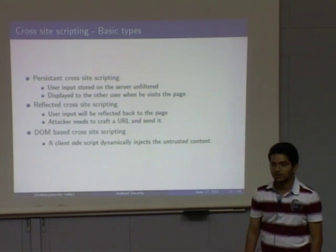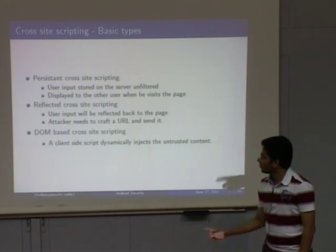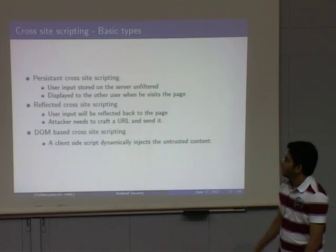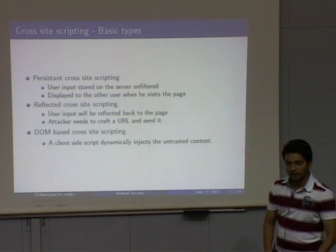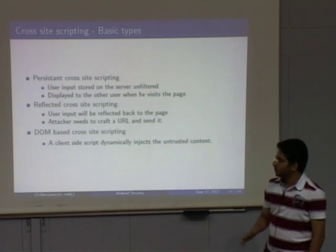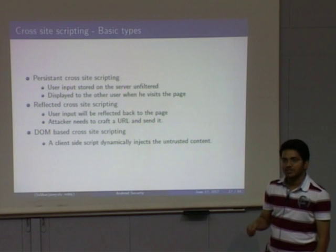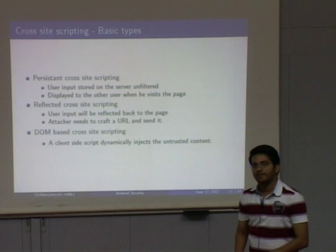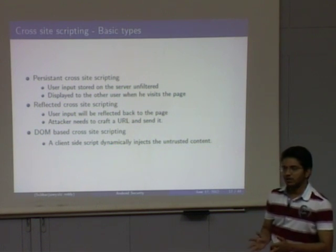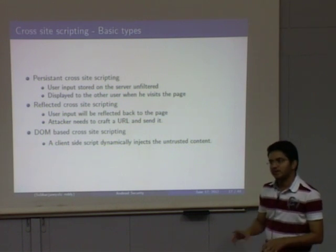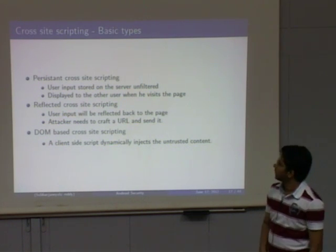Cross-site scripting has three types: persistent, non-persistent (also called reflected), and DOM-based. In persistent XSS, there is a web server with a vulnerability — we write malicious script that gets stored in the server itself, like in a forum with no input sanitization. The data is stored there persistently. Whenever a user views that forum, the malicious code is downloaded and executed in the browser.